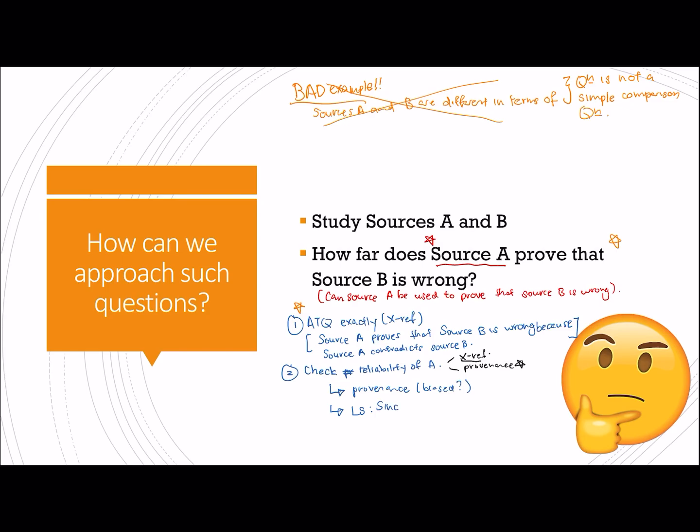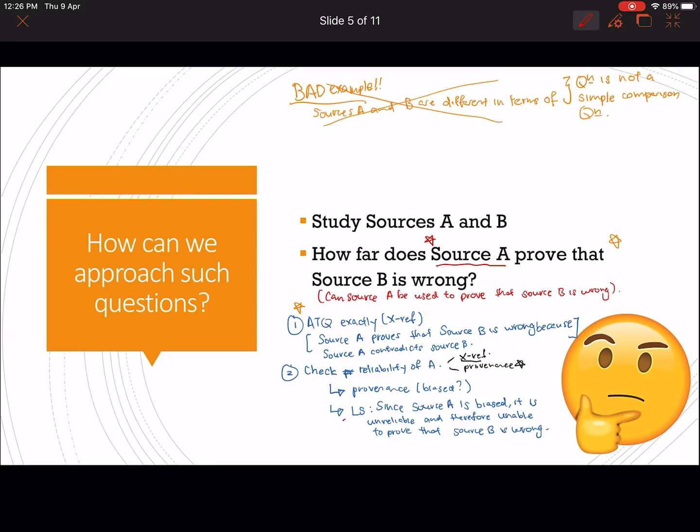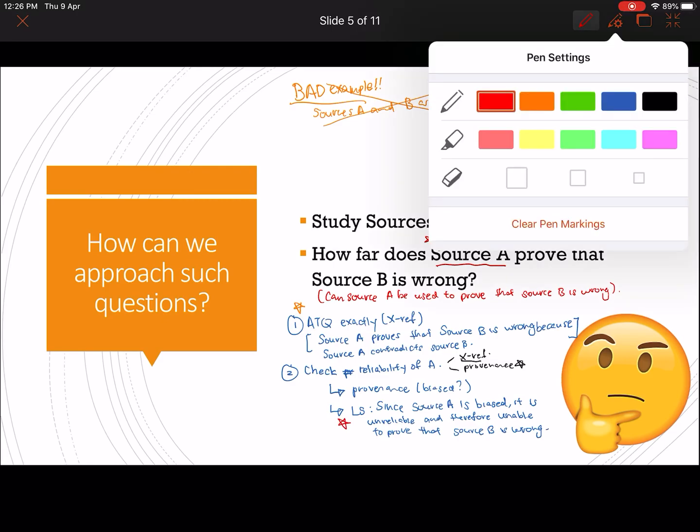Which is that since source A is biased, it is unreliable and therefore ATQ, link back to the question, and therefore unable to prove that source B is wrong. Without this linking statement, your checking of reliability is totally useless. If you don't address the question, your second paragraph wouldn't make sense at all. So always always make sure to write your linking statements, make sure that you ATQ.